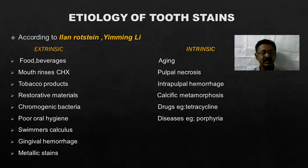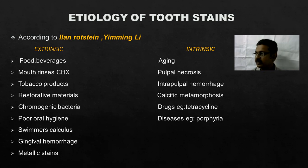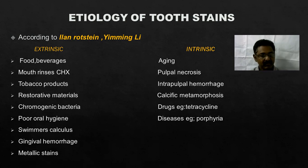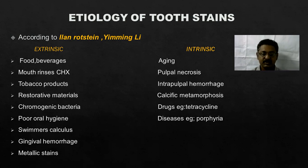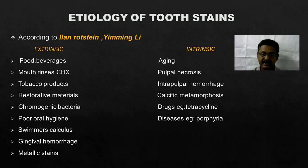The extrinsic sources are: one is food and beverages, then mouthwashes or mouth rinses what we use — that is like chlorhexidine — then tobacco products, different restorative materials, chromogenic bacteria, poor oral hygiene, then swimmer's calculus, gingival hemorrhage, and metallic stains.